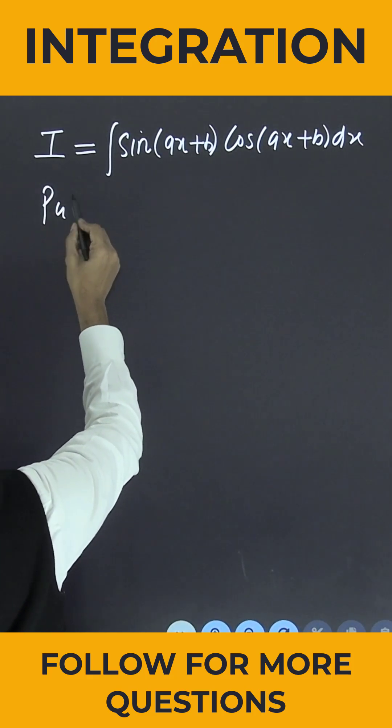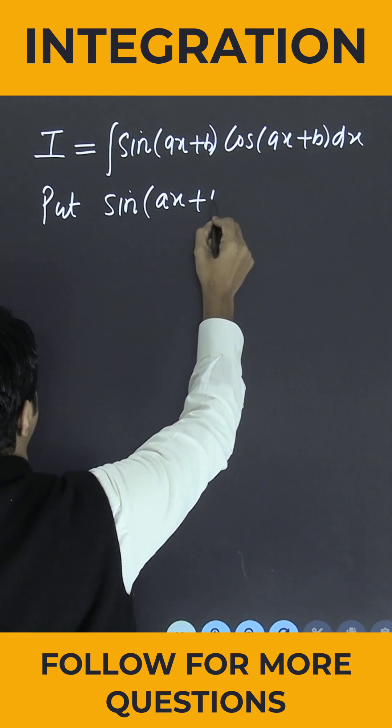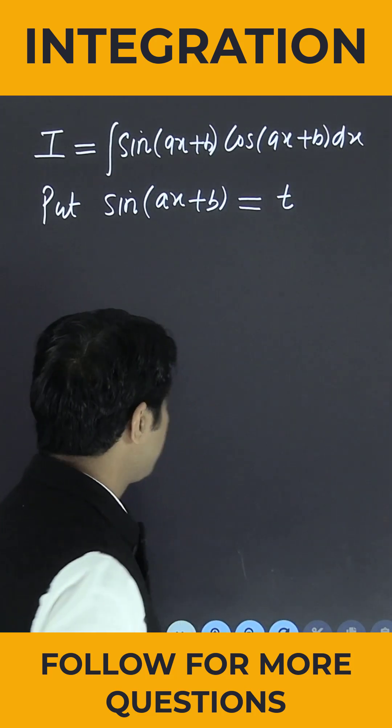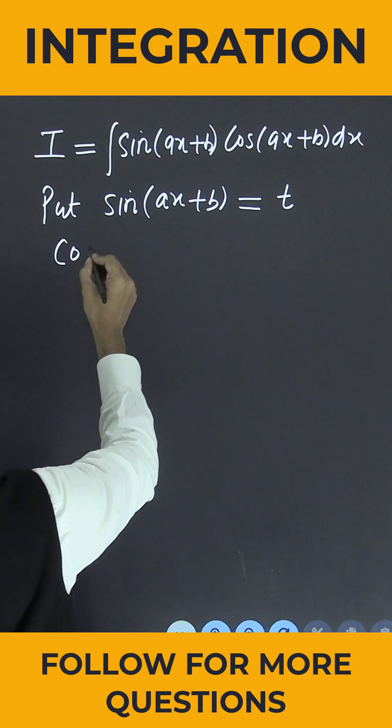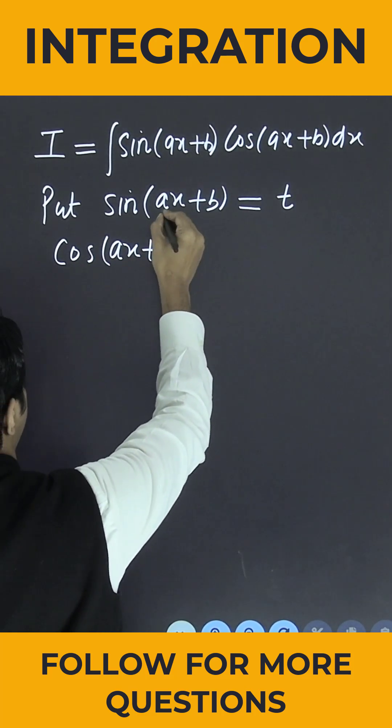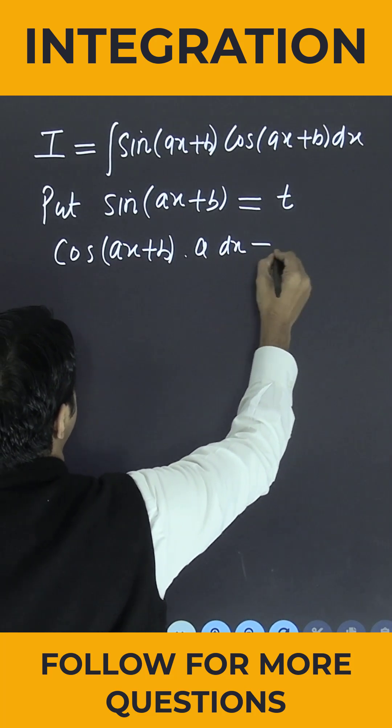Now, can I put sin of ax plus b equal to t? If I differentiate both sides with respect to x, I will be getting cos of ax plus b. Further differentiating, it will become a dx equals dt.